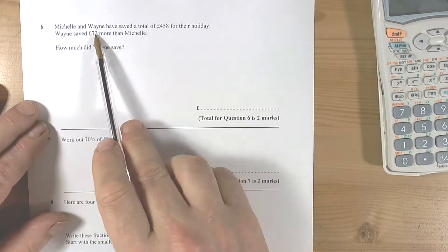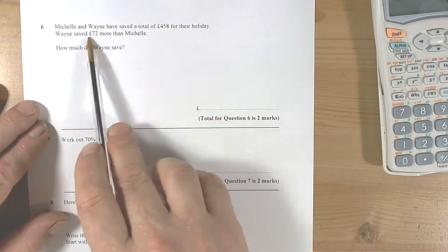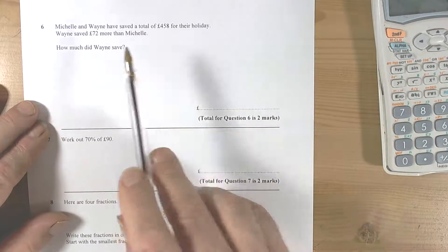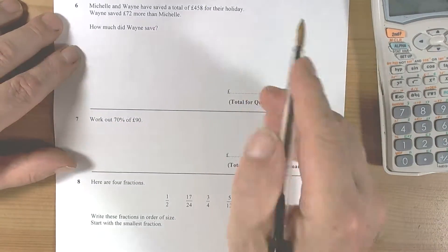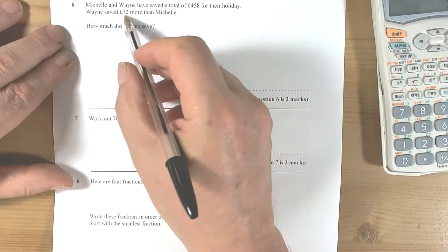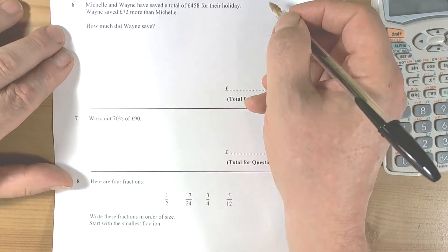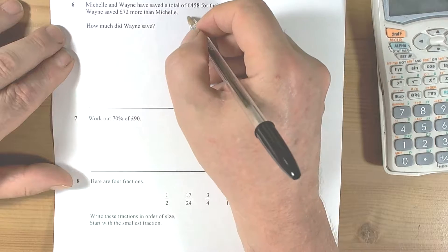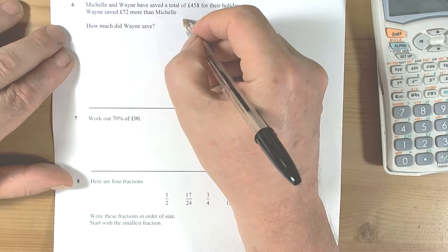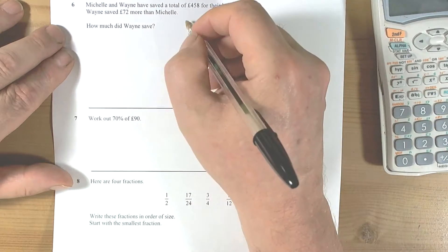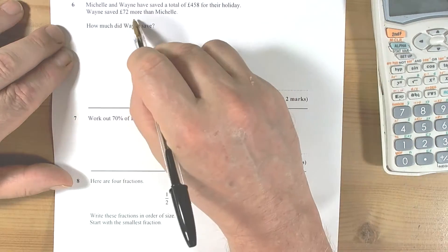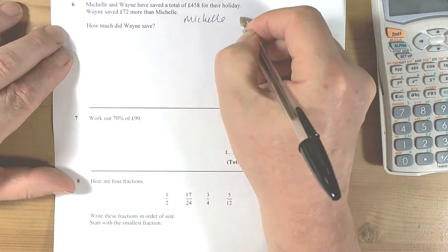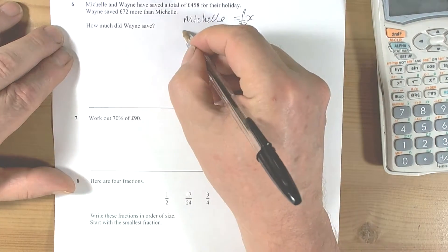Okay, so we've got a question here about holiday savings. Wayne saved 72 pounds more than Michelle. How much did Wayne save? It's one of those logic problems, so I'm going to do my algebra. Michelle equals x pounds and Wayne equals x plus 72.